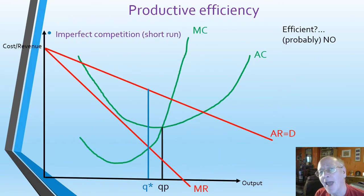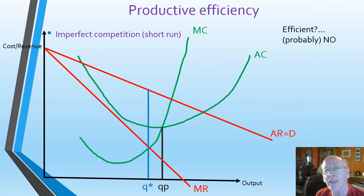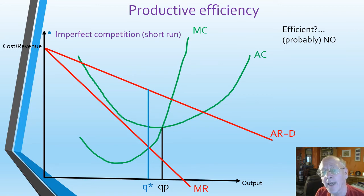If we look at how this comes into action in an imperfect market in the short run — which is monopolistic competition or monopoly, or in fact a monopoly in the long run because there's no difference — my conclusion is that they are probably not going to be efficient because they're imperfect. You can see from the diagram why this is likely. To be efficient, they'd need to be producing at the lowest part of the AC curve at QP. But if they profit maximize, they're producing at Q star, which isn't the same position as QP. They are not efficient — they are not using their resources in an efficient way.